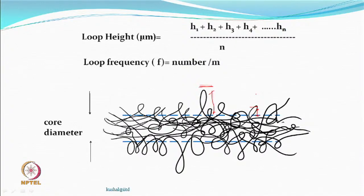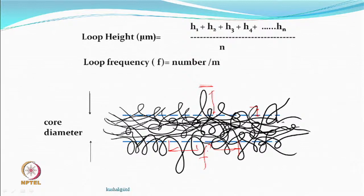When you change process parameters such as overfeed or air pressure, the number of loops per unit length — the frequency of loop appearance — will change accordingly. These microscopic measurements can help explain process behavior.